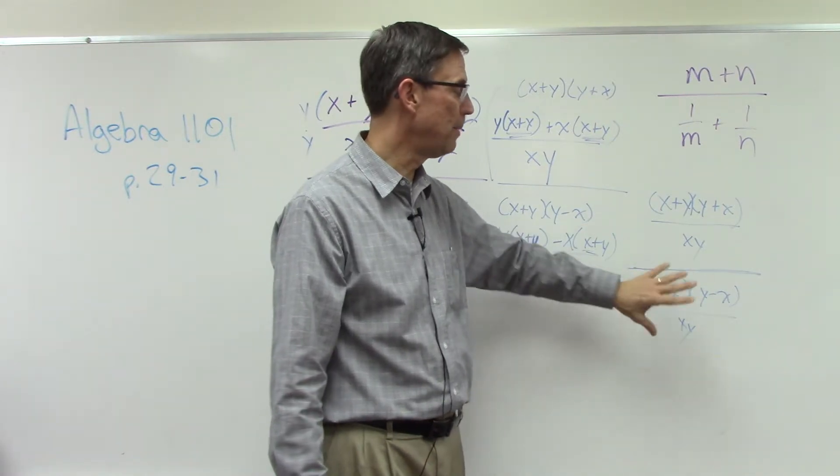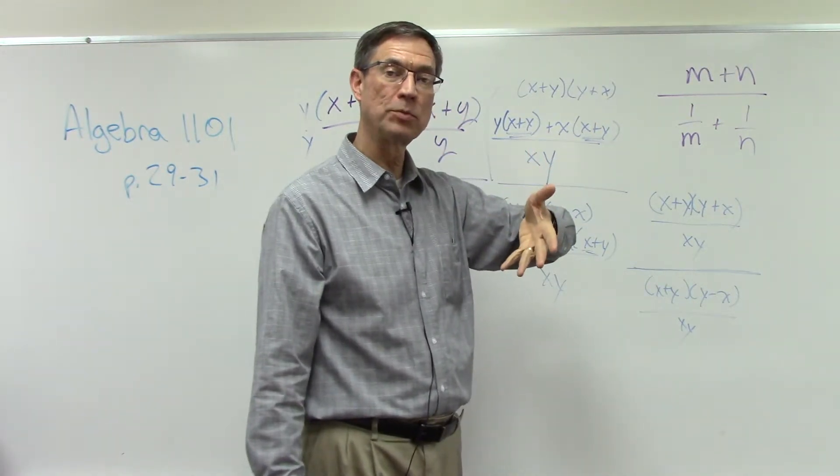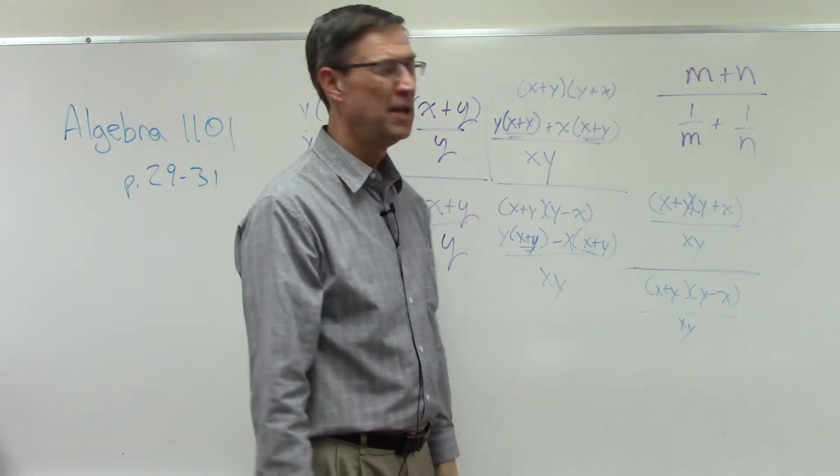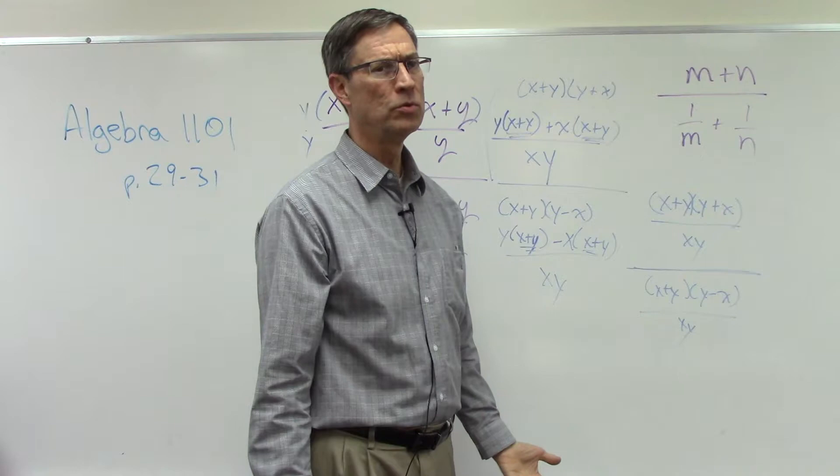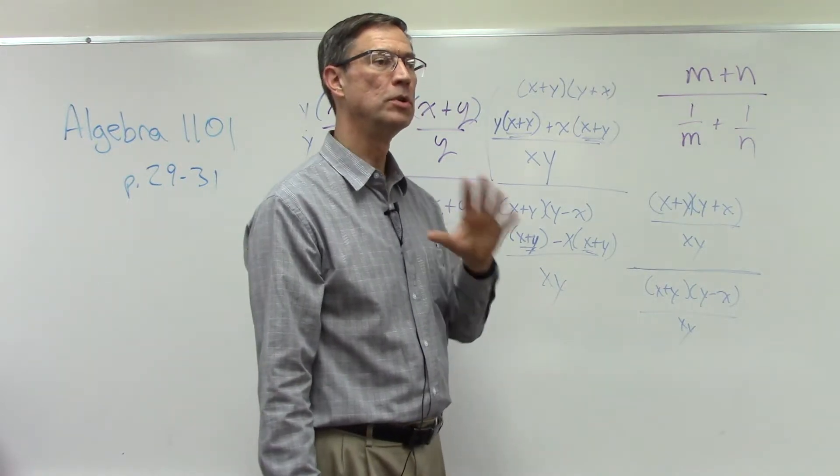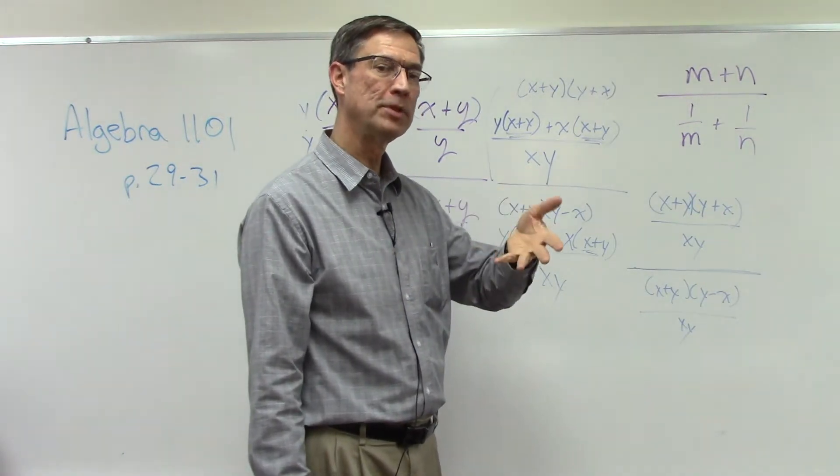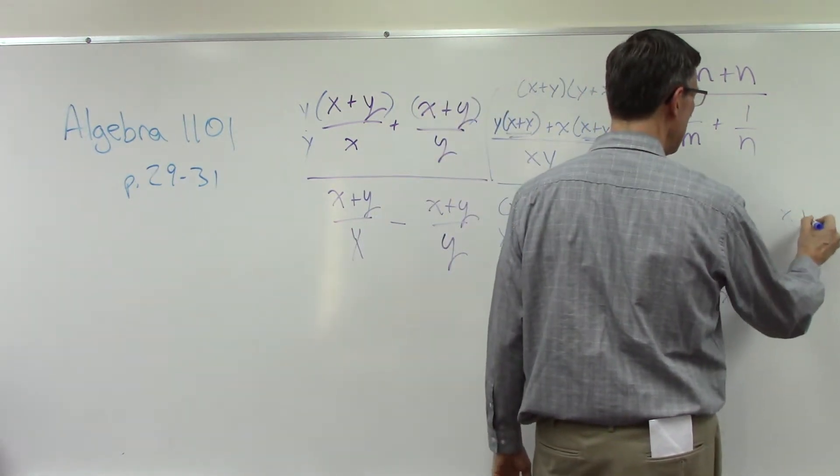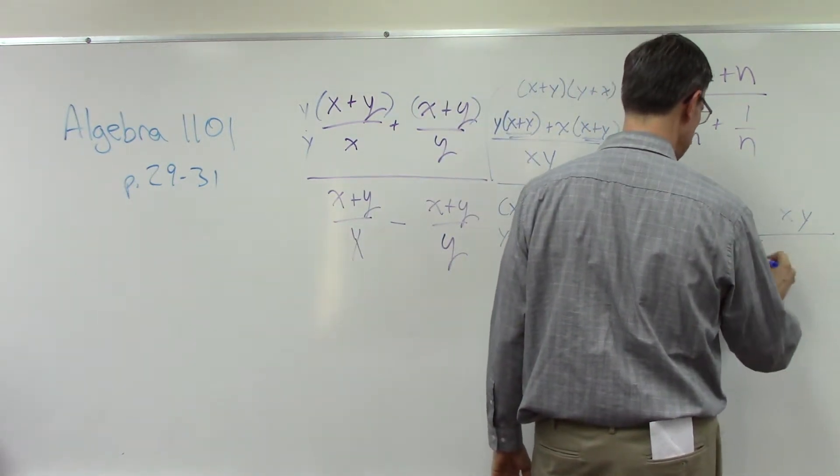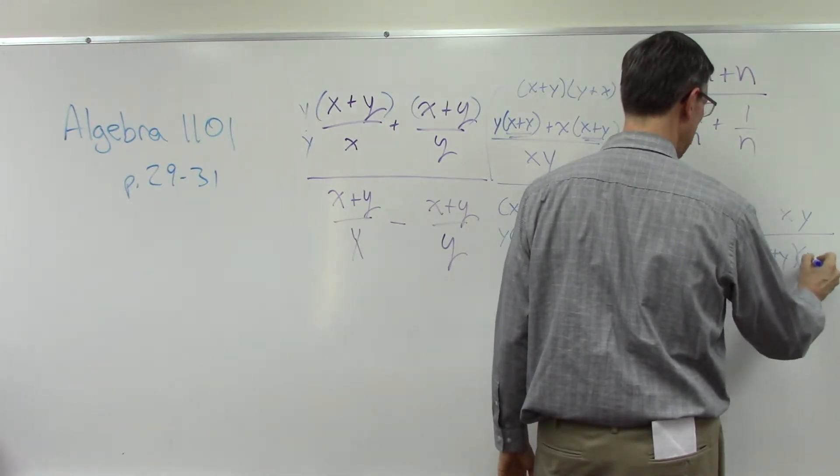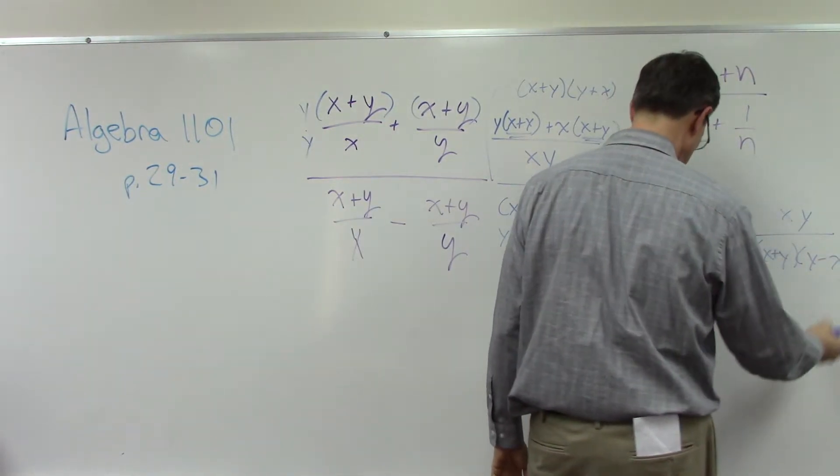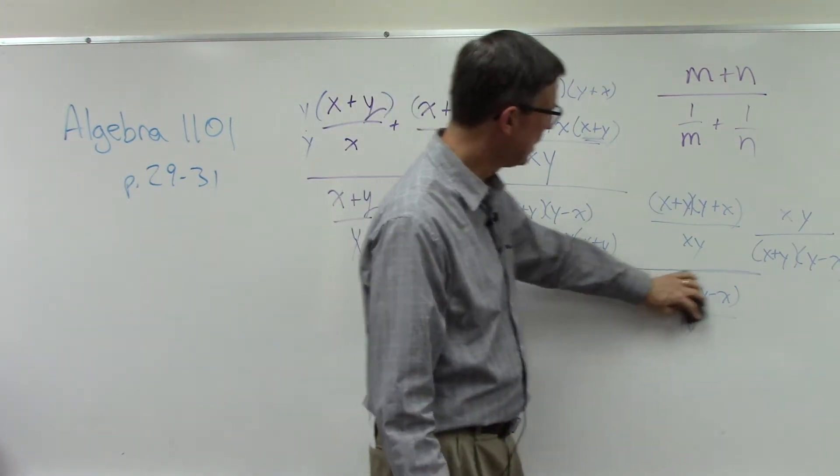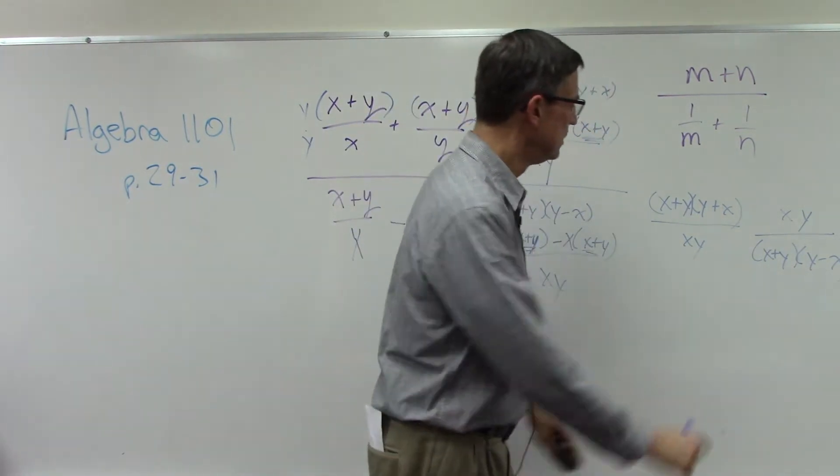So we take this denominator, we have to flip it upside down, that's what the reciprocal means, and then we multiply. And we did that back in elementary school and junior high with fractions. When you're dividing by a fraction, you flip the second one and multiply. So I'm going to bring this up here and have xy times x plus y times y minus x. Now here's where the magic happens.